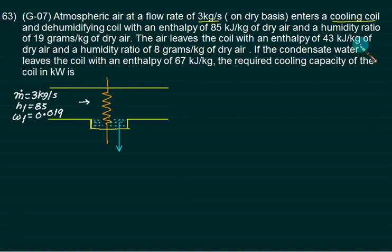The air leaves the coil with enthalpy H2 equal to 43 kilojoules per kg and W equals 0.008. The condensate water leaves the coil with enthalpy 67 kJ/kg. We want to find out the cooling capacity of coil. Cooling capacity of the coil is the external heat you have to remove from this.